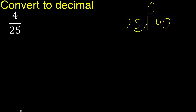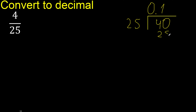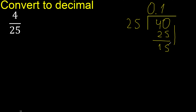25 multiplied by what number is nearest to 40? Multiplied by 2 is 50 — excessive. Multiplied by 1 is 25. The nearest number: subtract 40 minus 25 is 15. There is no number that goes down, therefore complete with 0.